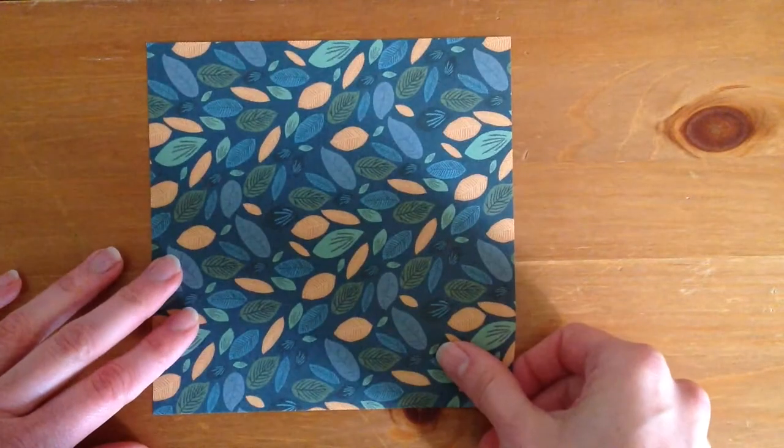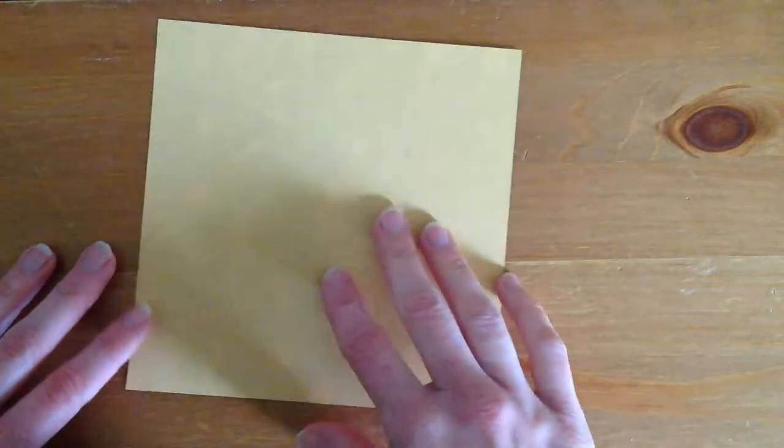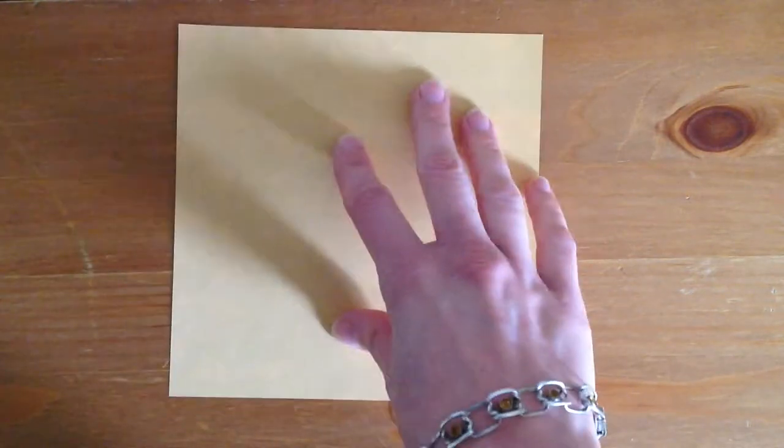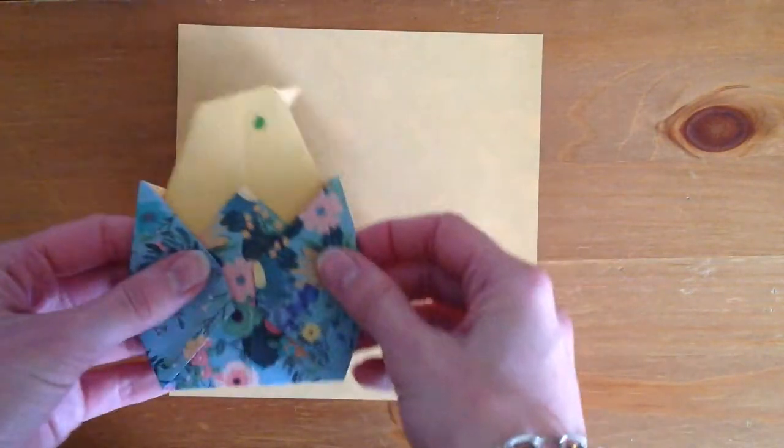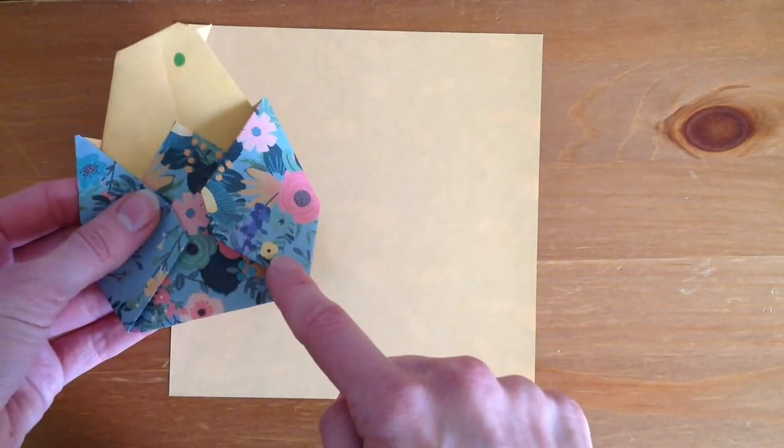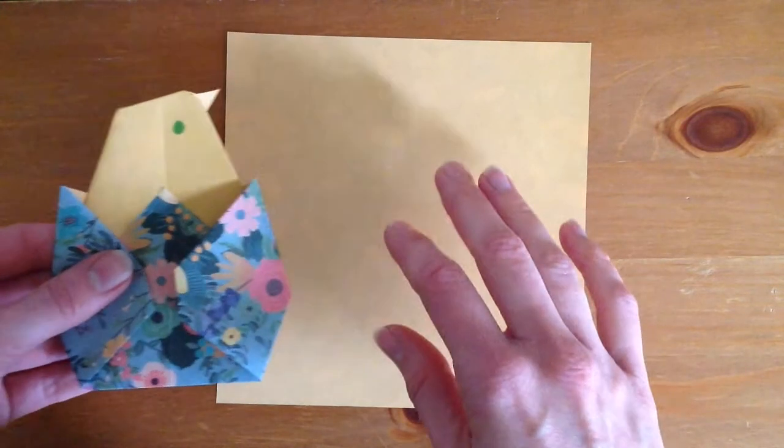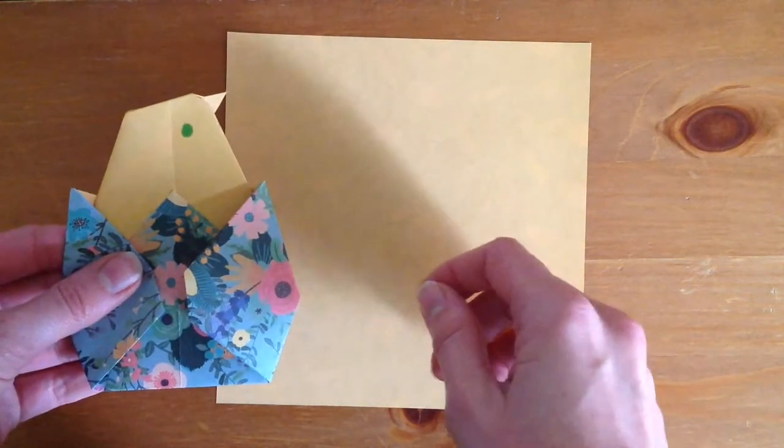We're starting with a square piece of paper. Mine has a pattern on one side and a colour on the other. So I'm going to start on the colour side because I want my chick to be that colour and my egg to be the pattern. If you have a sheet that's different on either side, I will let you decide which side you want to start.